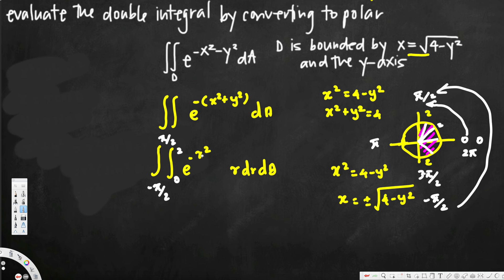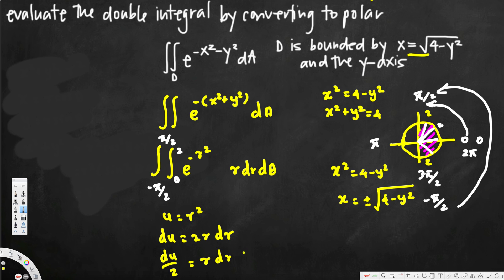Now from here you can see this is an easy u-substitution, because we have the derivative outside. Let's take u equal to r squared. If we take u as r squared, then du is going to be 2r dr. Here we have r dr only, so we rearrange: du/2 is going to be equivalent to r dr. Now we can write everything in terms of u, but we also have to change the limits of integration. Plugging in: when r equals 0, u equals 0; when r equals 2, u equals 4. So the new limits are 0 to 4.